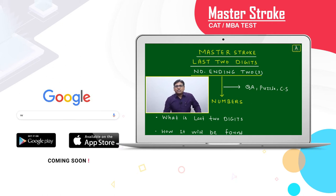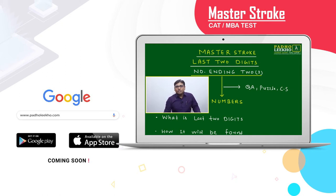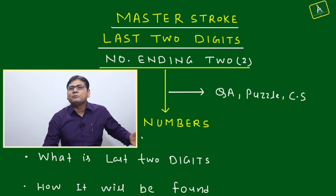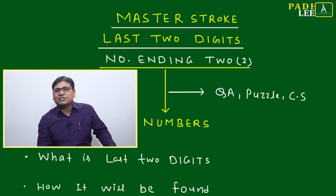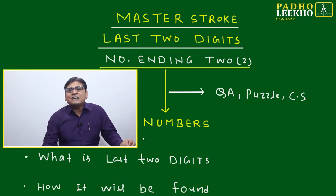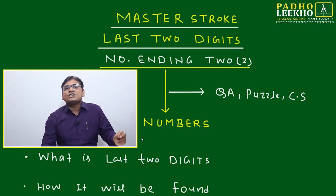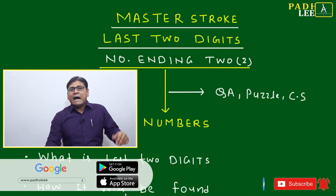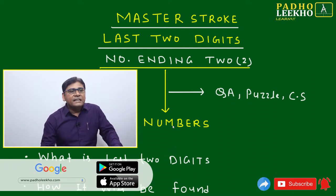Welcome to the season of Master Stroke. In this Master Stroke, I am going to discuss the last two digit concept. I am discussing numbers ending with two — how to find the last two digits and the application of that.